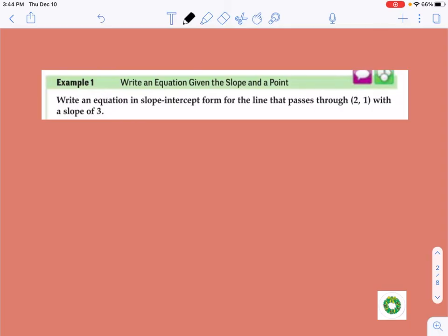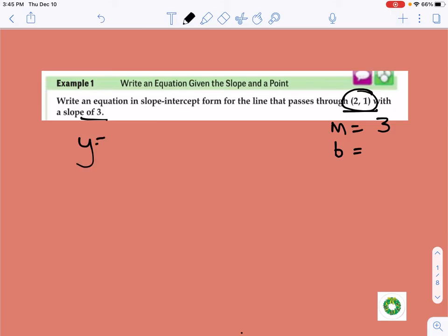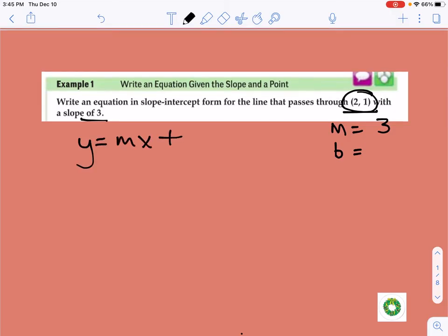It says write an equation in slope-intercept form for the line that passes through this point (2, 1) with a slope of 3. So this is what I know. I know I need to find slope and I need to find my y-intercept. They gave me slope, they told me slope is 3. So I'm halfway there but they don't give me a y-intercept. But what they do give me is a point. And so what we find is if you look at this equation, if you look at your slope-intercept form, y equals mx plus b, there's this really cool thing you can do with it.